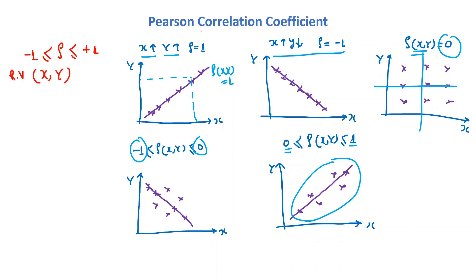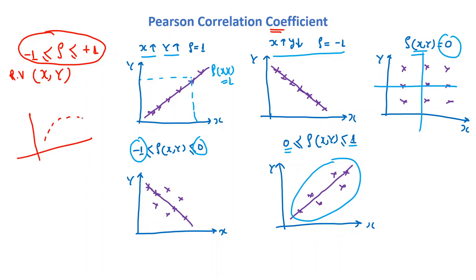The Pearson correlation coefficient value lies between minus 1 and plus 1. Most of the time the data has some linear pattern, but in some cases our data has a non-linear pattern. If you see the regression line for such data, the line would be like this, but the data itself has a non-linear pattern.